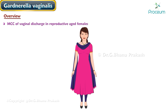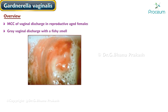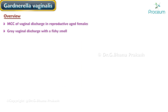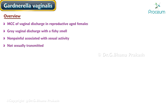Bacterial vaginosis is the most common cause of vaginal discharge in females of reproductive age. It presents as a gray vaginal discharge with a fishy smell. It is non-painful versus vaginitis, associated with sexual activity but not sexually transmitted. A selective medium for Gardnerella is colistin-nalidixic acid blood agar.